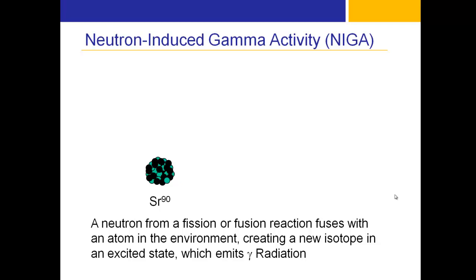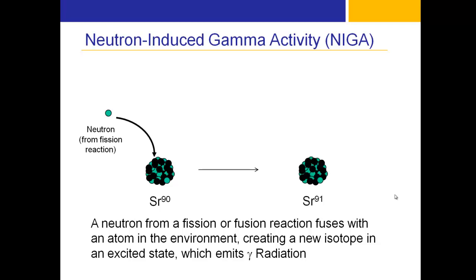If free neutrons are created by this process, they need somewhere to go. They will fuse with an atom in the environment — one not necessarily part of the explosion — creating a new isotope in an excited state that emits gamma radiation. For example, strontium-90 absorbs a neutron, becomes strontium-91 one atomic weight heavier, and gives off gamma radiation.